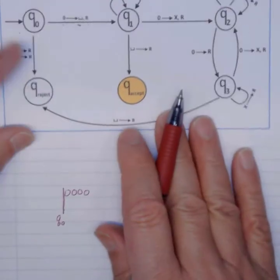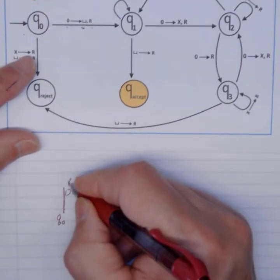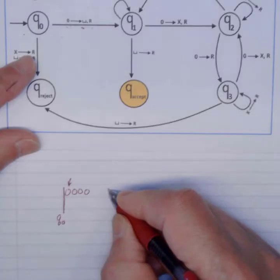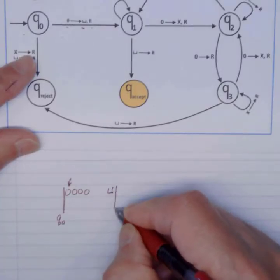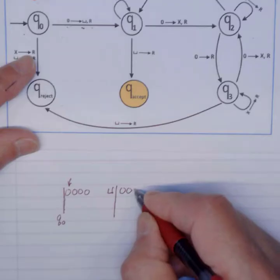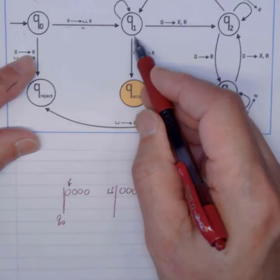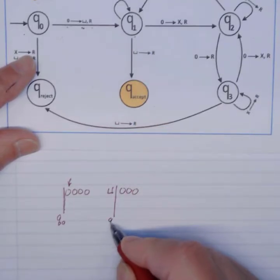So my first 0, this one here, will be changed to a blank, and I move right, and I have my 3 zeros. Now, when I move to the right, I'm at Q1. So this here will be Q1.